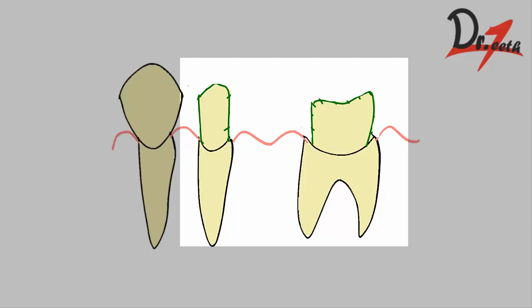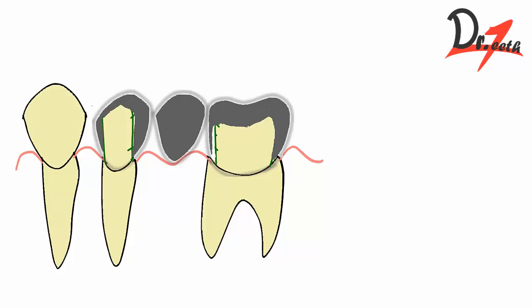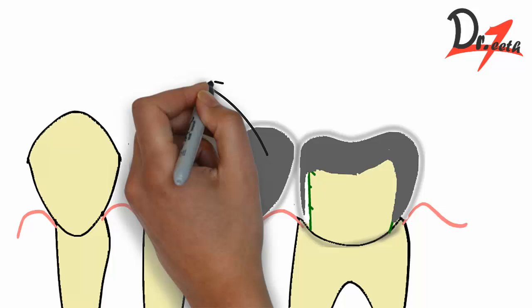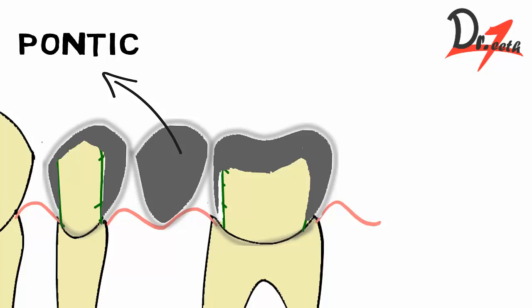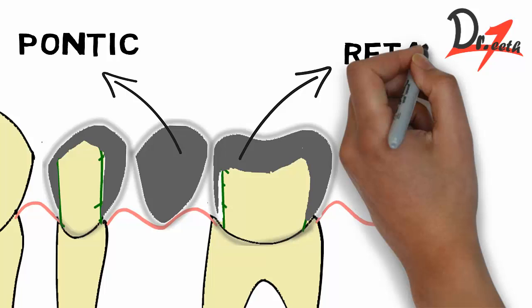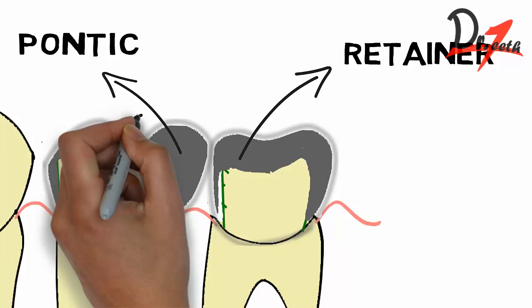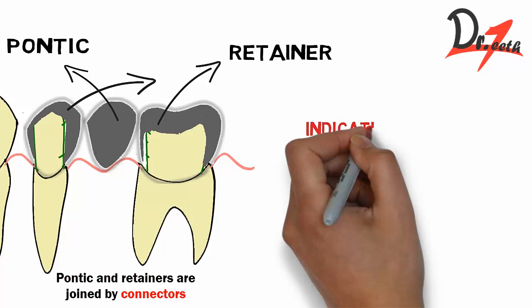So we get a prepared tooth, then we make an FPD and put it on the teeth. This FPD has certain parts. The part in the middle is replacing the tooth that was lost — this is the artificial tooth we are replacing, called the pontic. Then we have a cap-like structure on the abutment teeth called the retainer, because it helps in retaining the FPD. The pontic and the retainer are joined by something called connectors.